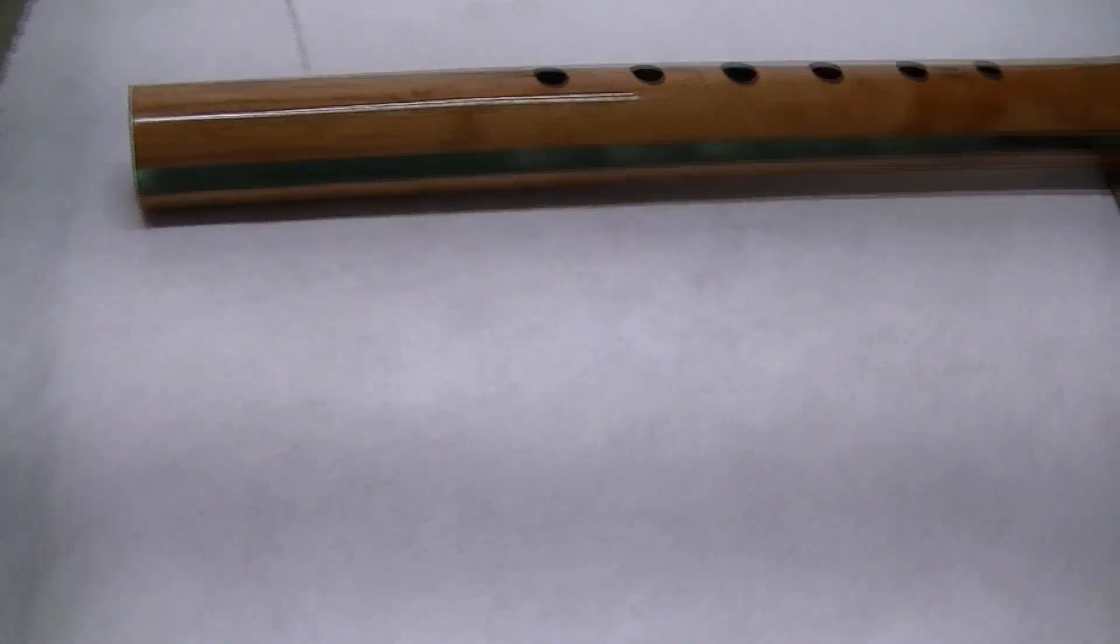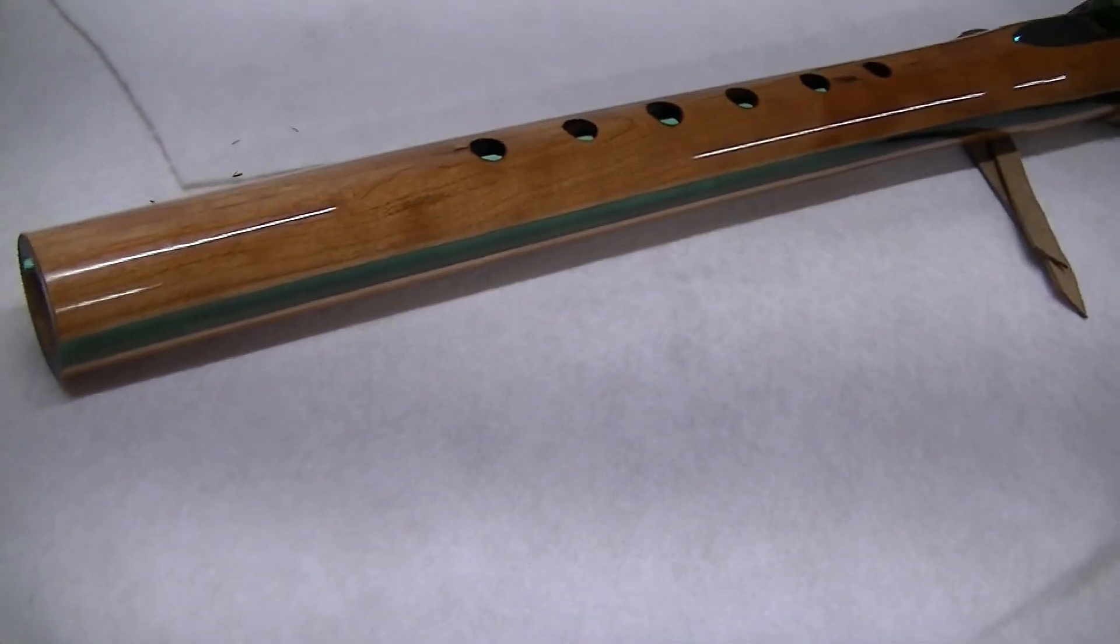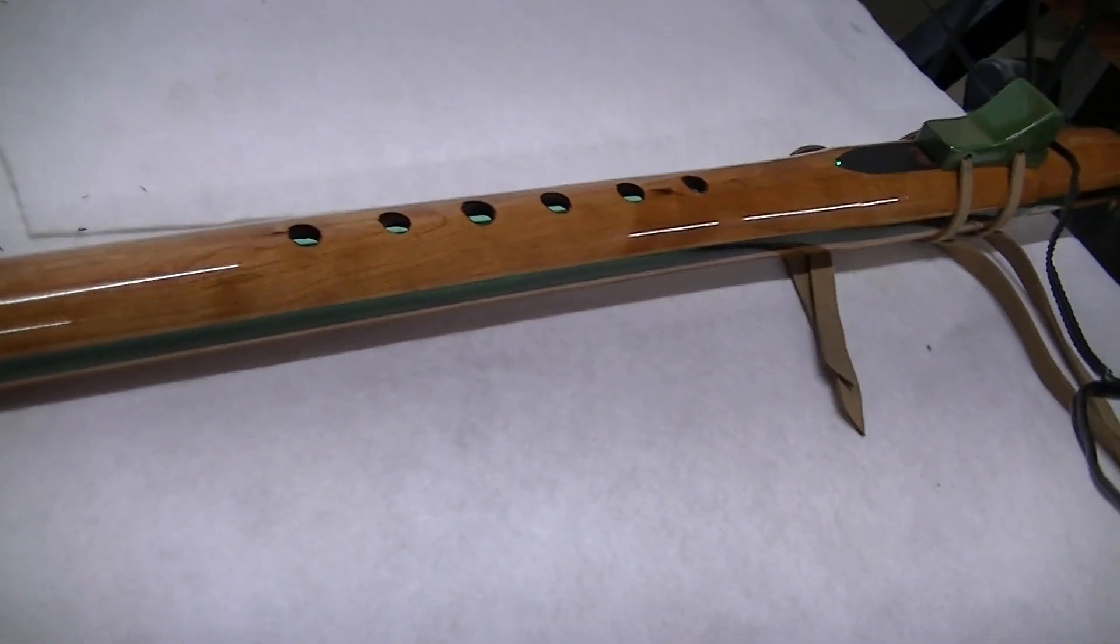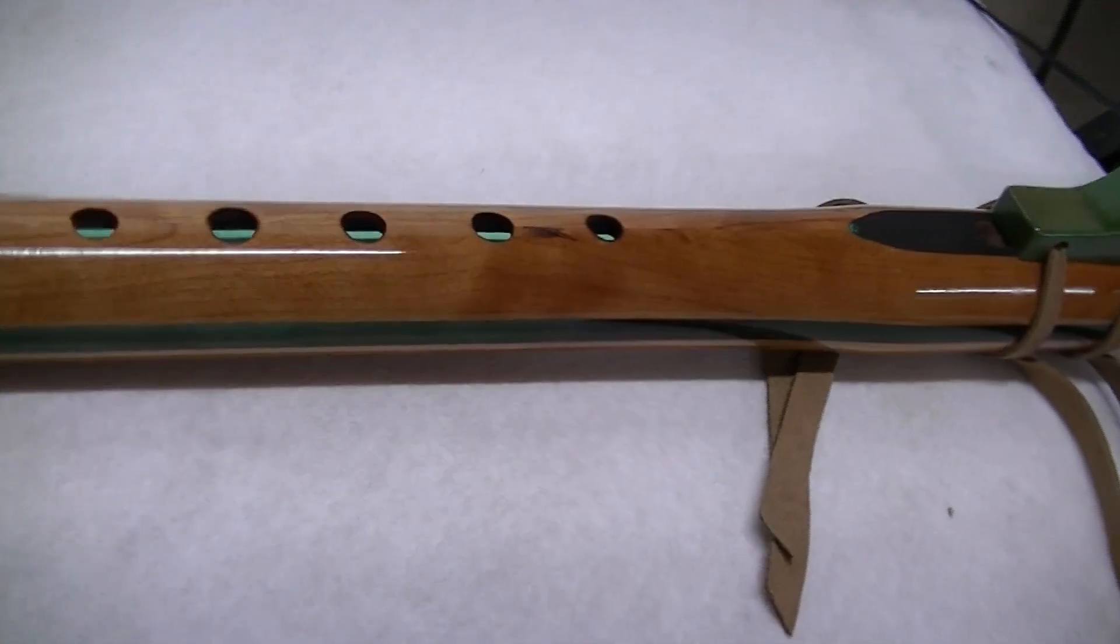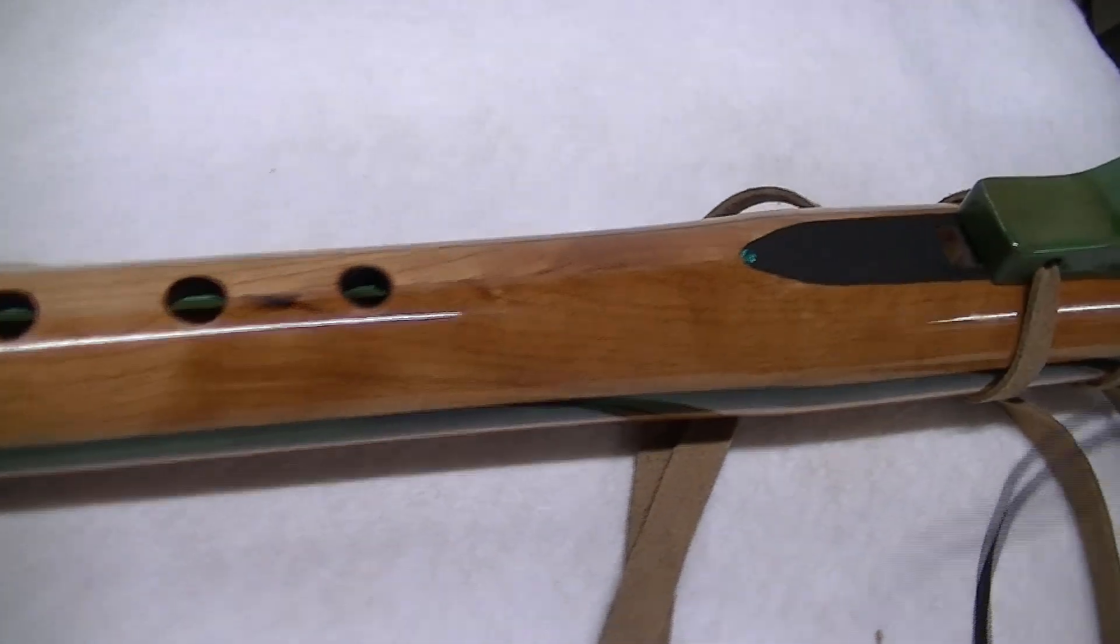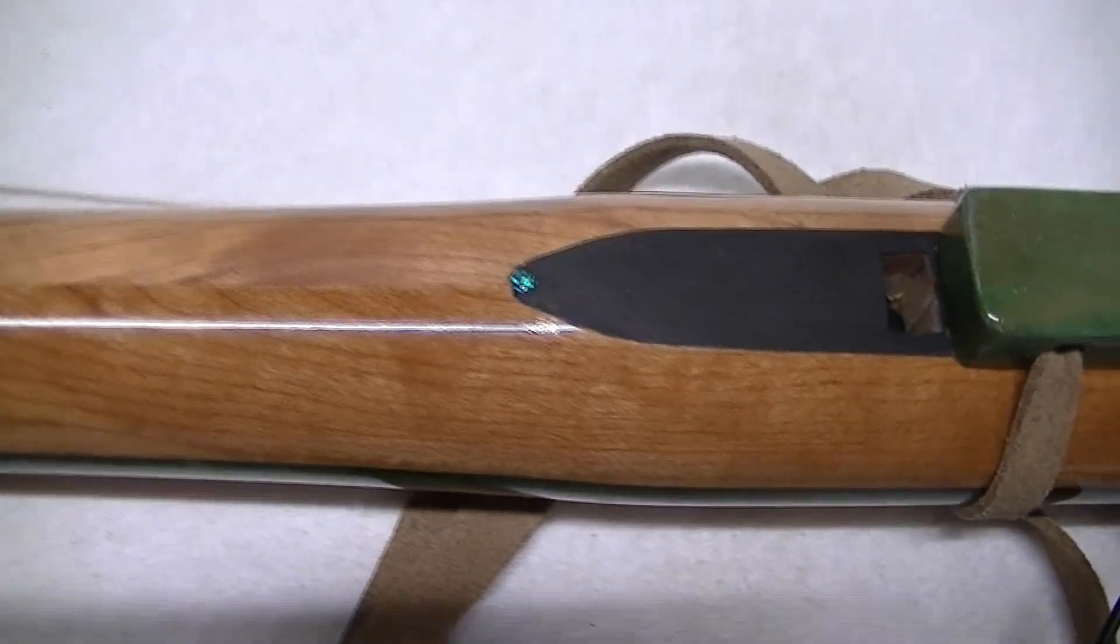The body of this flute is made of cherry and it's just all natural, it's just clear coated. I have a secret for my clear coating. I have no idea what type of gem that is.